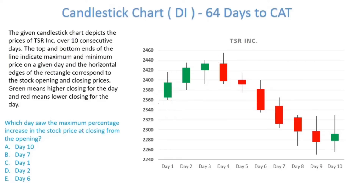Which day saw the maximum percentage increase in the stock price at closing from opening? For maximum percentage increase, the red ones have to be discarded because there will be a negative percentage change in those cases. So days 4, 5, 6, 7, 8, and 9 are eliminated. That leaves us with days 1, 2, and 10.